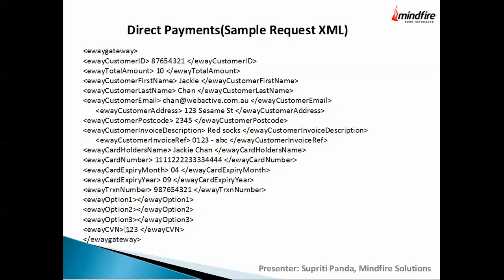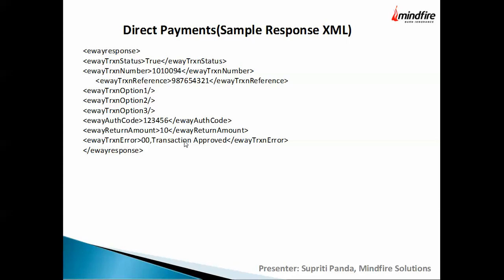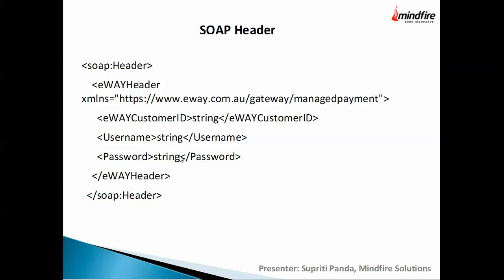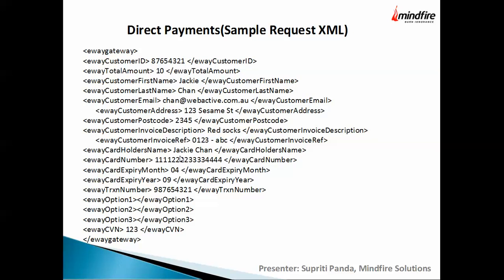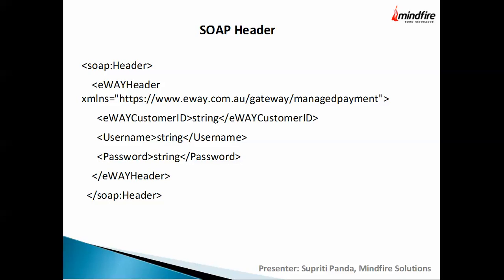The option fields allow you to send extra information with the payment. The XML collects all credit card and customer information. A sample response from direct payment returns the transaction status as true or false; if true, it sends back a transaction number and any options you submitted. In the SOAP API you must send a SOAP header containing the eWAY customer ID, username, and password.